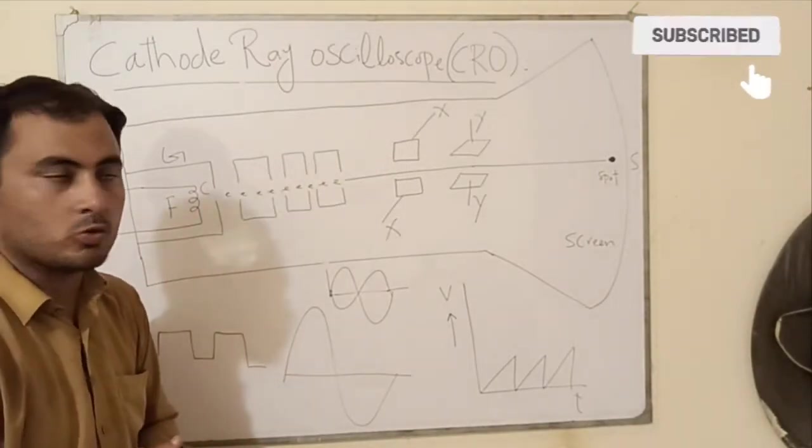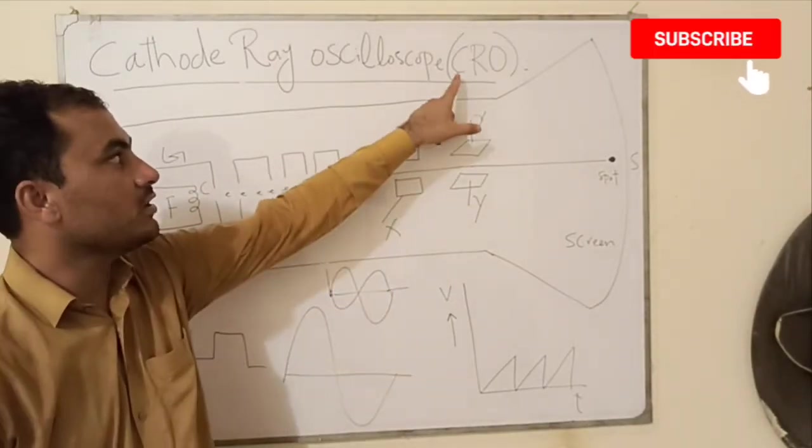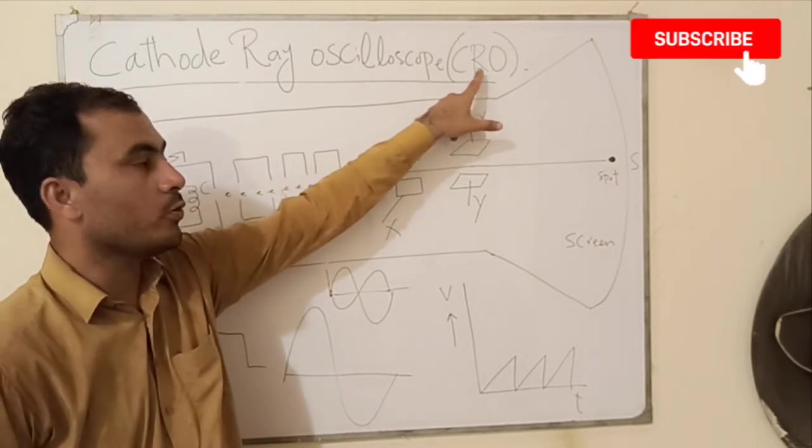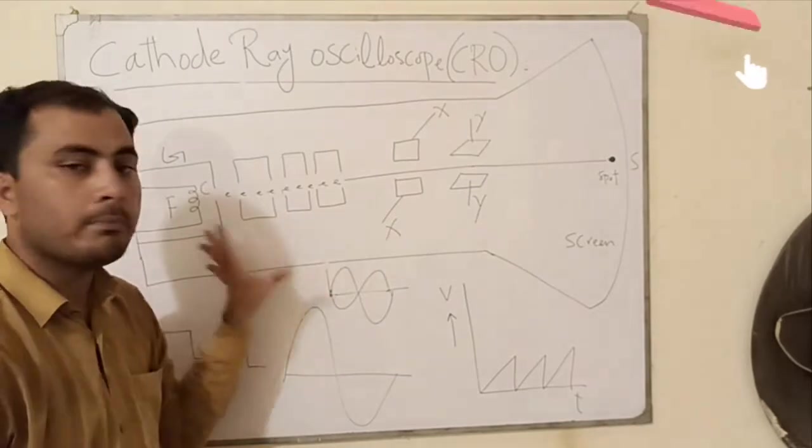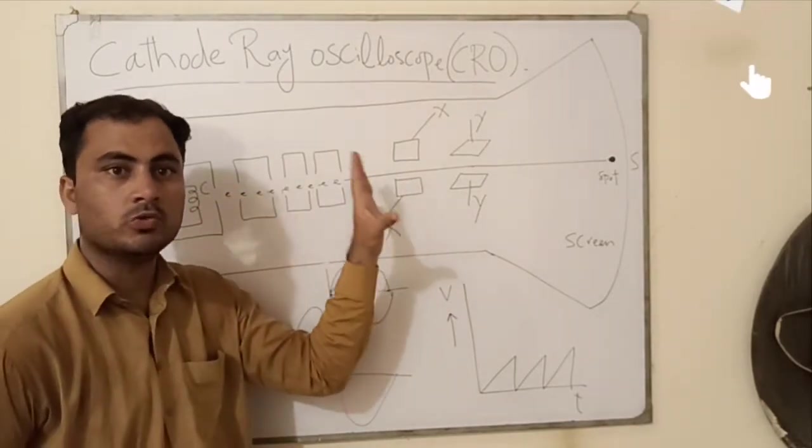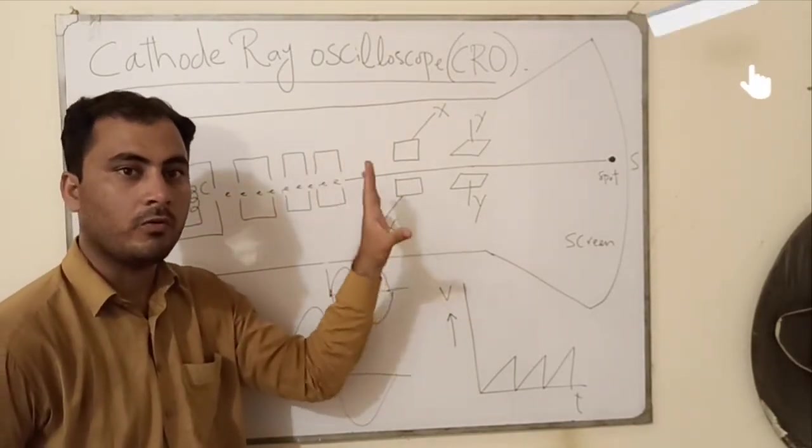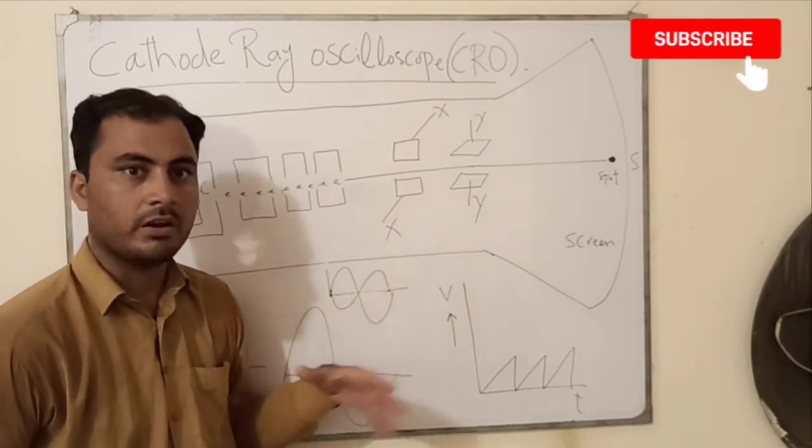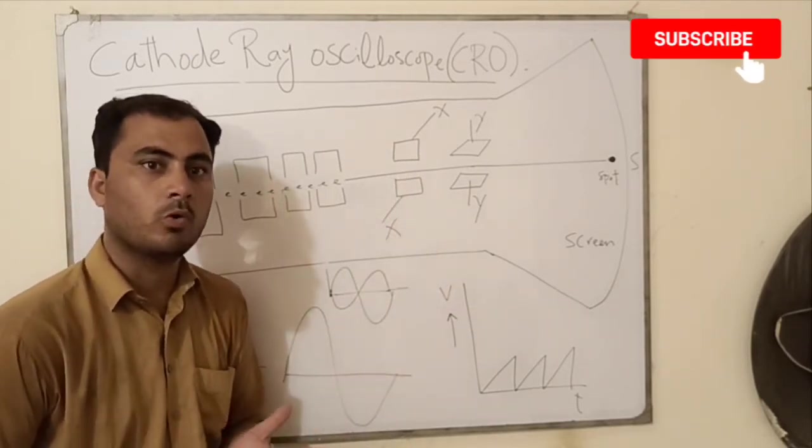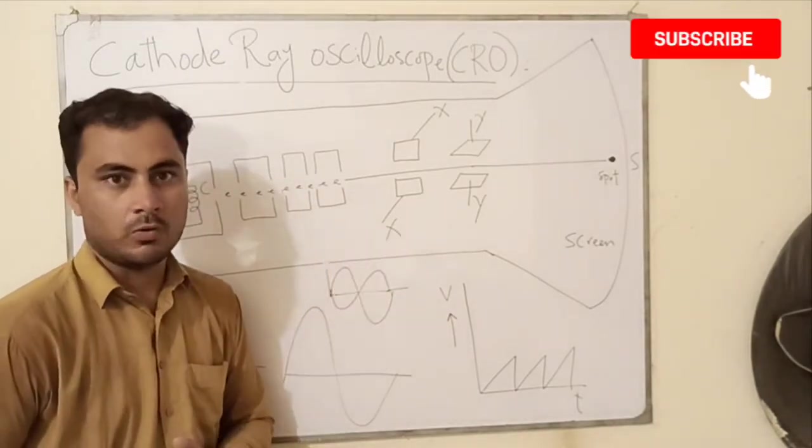What is Cathode Ray Oscilloscope? Basically it is called CRO, which means Cathode Ray Oscilloscope. It is a high-speed graph plotting device which is used for displaying a graph of a particular function. For example, if we want to display the graph of a voltage signal, then we can use CRO.